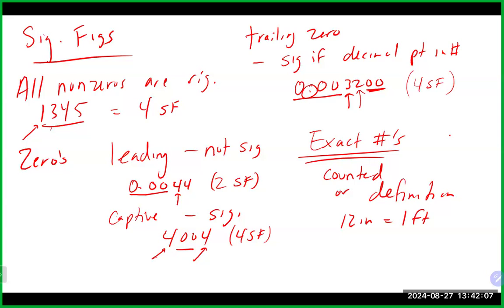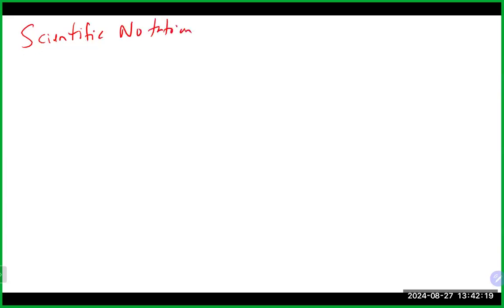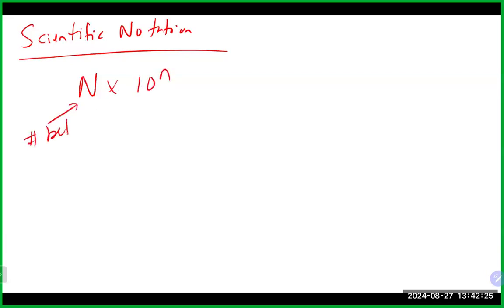Sometimes we use scientific notation, which has the general form of N times 10 to the N. That number must be between 1 and 10 — not 10 or above, and not less than 1. The exponent will be either positive or negative depending on which way you need to move the decimal point to get to a number between 1 and 10.